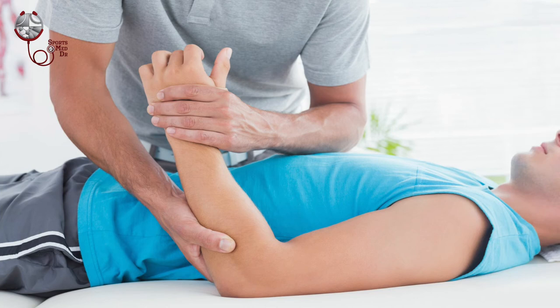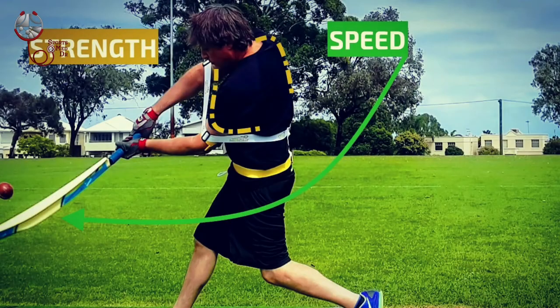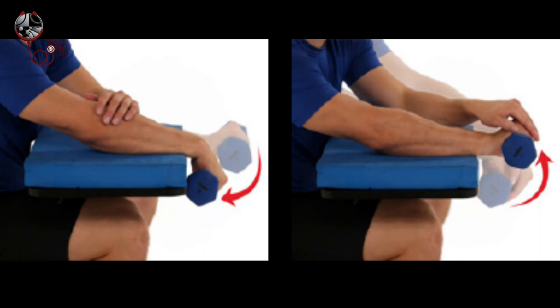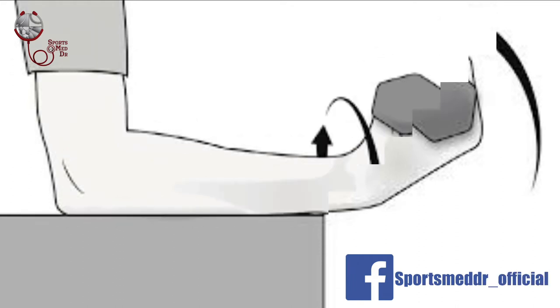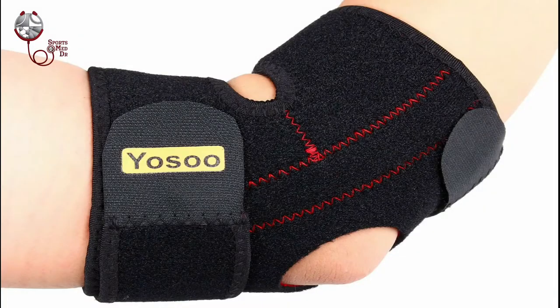How do you diagnose tennis elbow? A basic examination can easily diagnose it, but if you want to confirm it, an ultrasound or MRI is the gold standard. How do you manage it? First, correct the technique. Then reduce the pain and start strengthening the muscle areas — the forearm muscles on both sides, both agonist and antagonist. Tennis elbow braces can also be used to reduce load on the muscle.